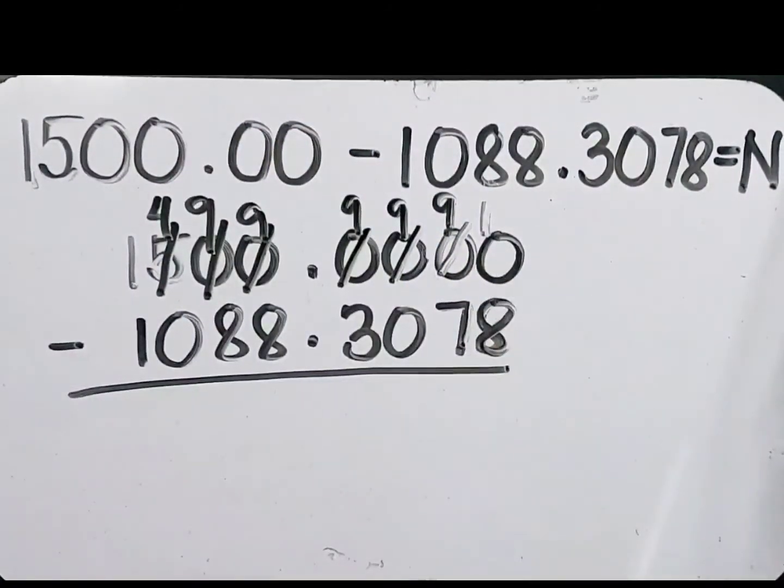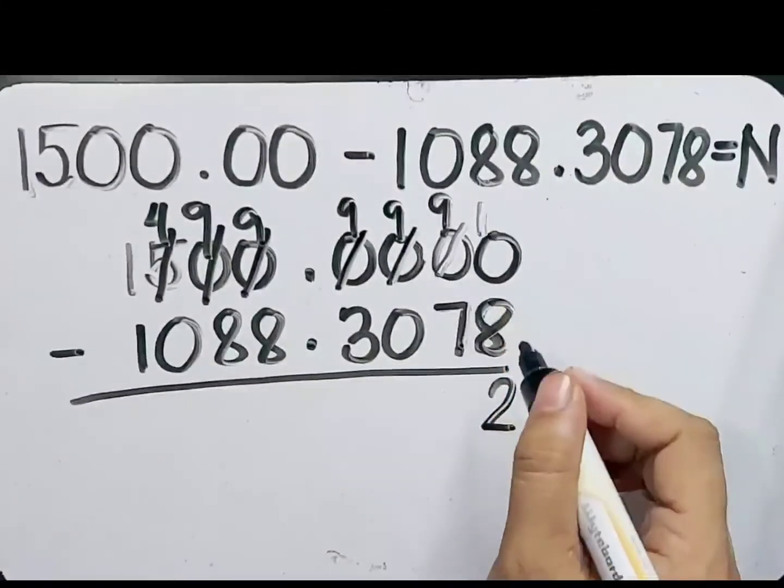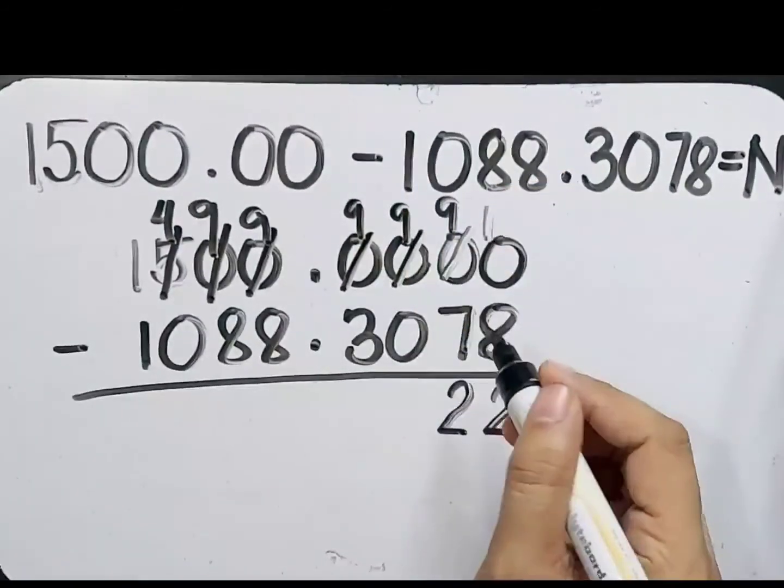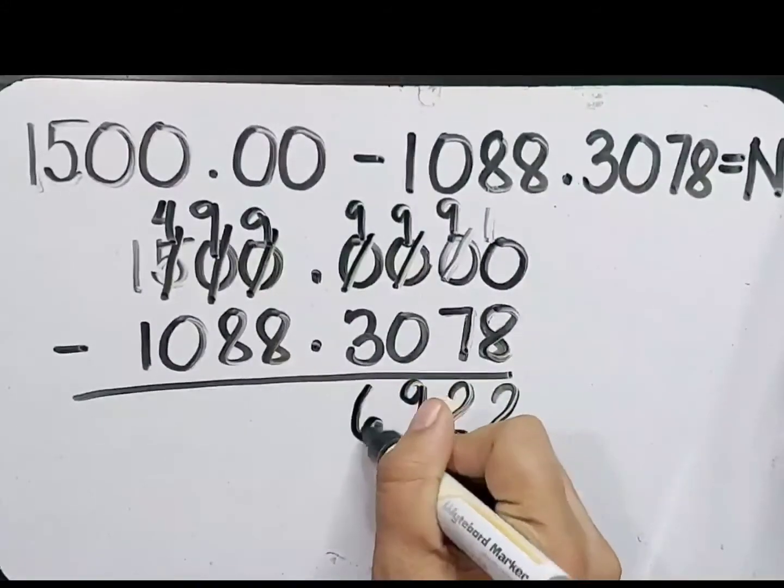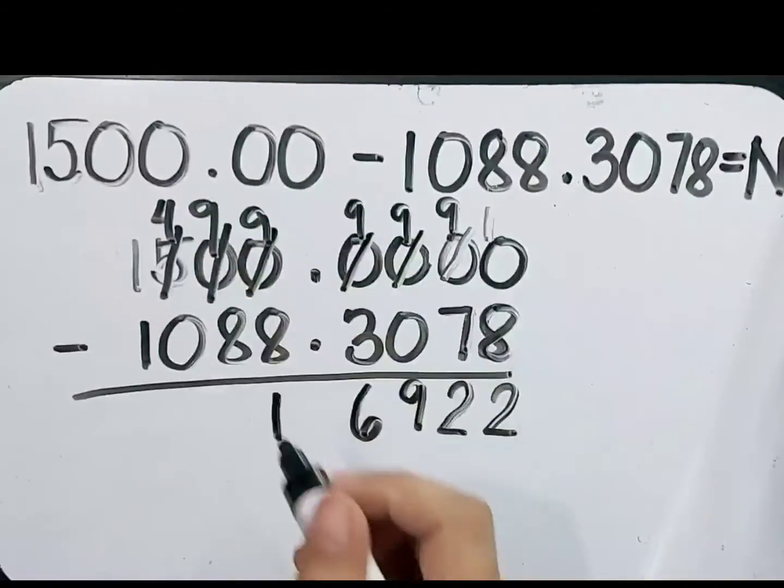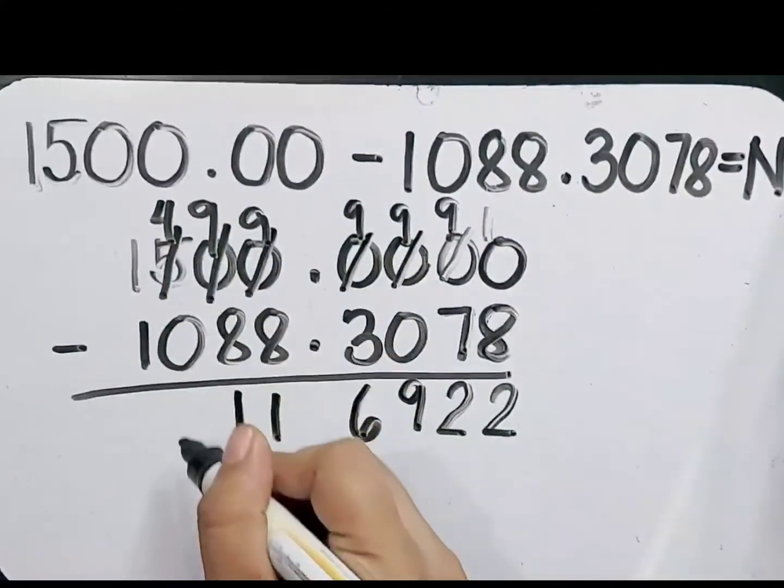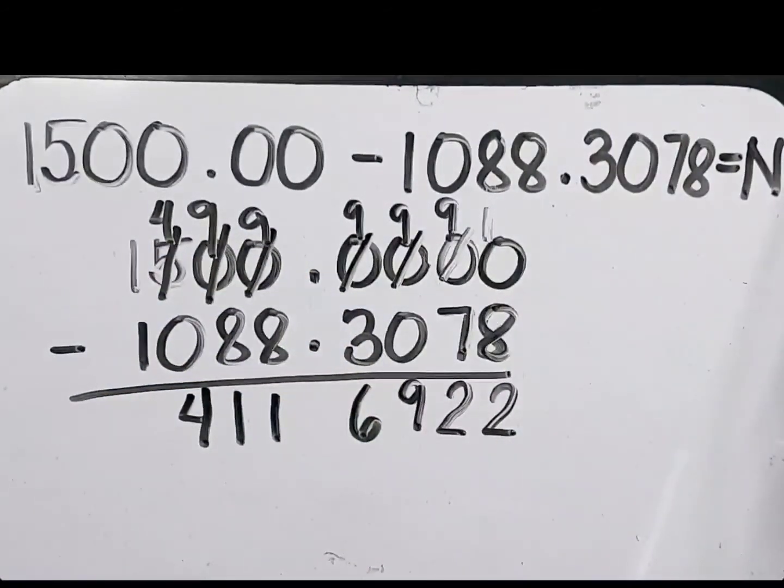10 minus 8 equals 2. 9 minus 7 equals 2. 9 minus 0 equals 9. 9 minus 3 equals 6. 9 minus 8 equals 1. 9 minus 8 equals 1. 4 minus 0 equals 4. And 1 minus 1 equals 0.